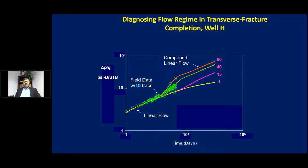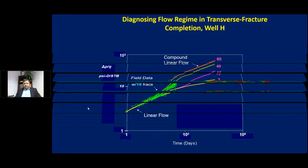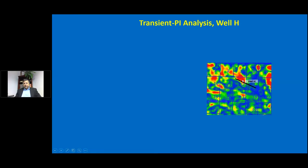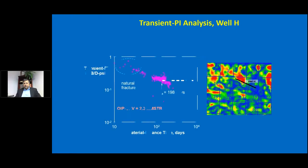Looking at field data, we have the linear flow period (half-slope line) followed by an inner slope response. This response suggests we would need 40 fracture stages for the curve to behave that way, but in reality we had only 10 fracks — how do you explain it? What happened is that half the well intercepted natural fractures based on seismic, and that was not factored into the model. That's the good news, but it's something we need to understand is present in the system.